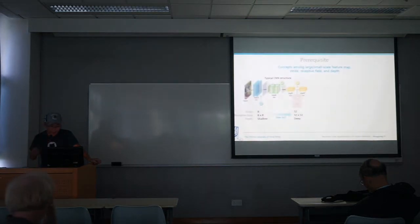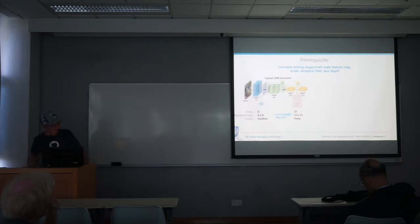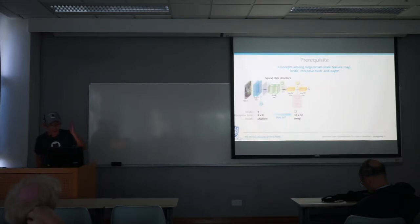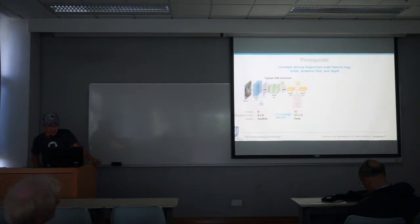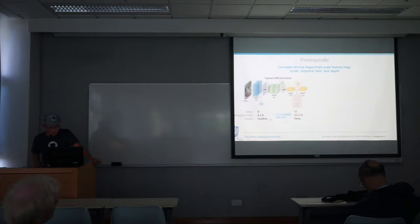Here are some prerequisites. In a typical CNN structure, we have convolutions downsampling all the way to high-level feature maps. The stride starts at eight; due to pooling or stride greater than two, the spatial size of the feature map is downsampled and becomes smaller in deeper layers. The stride becomes larger — multiplied by four — and the receptive field is 8×8. In deeper layers we have 22×22, with depth gradually increasing.